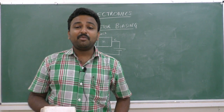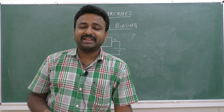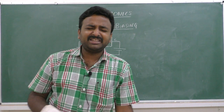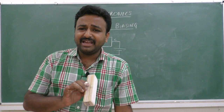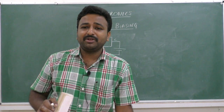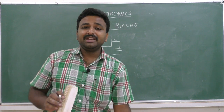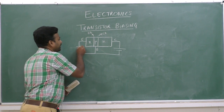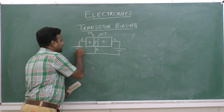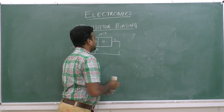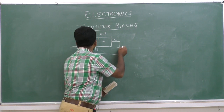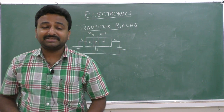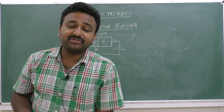There is a fourth mode not found in most textbooks — the inverting mode. In inverting mode, the emitter-base junction of the transistor is reverse biased, while the collector-base junction is forward biased. This mode of operation is known as inverting mode. It has limited practical applications in digital electronics.